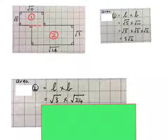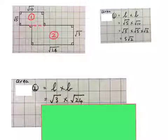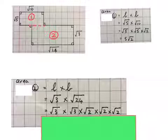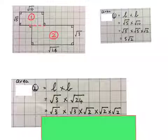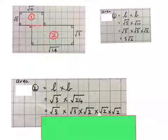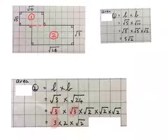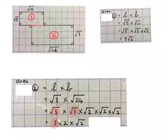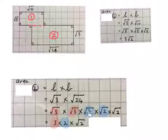You simplify these surds by multiplying them. You break up the square root of 24 into its prime factors and put a square root over each one of them. Square root of 3 times square root of 3 will give me a 3. Square root of 2 times the square root of 2 will give me a 2.